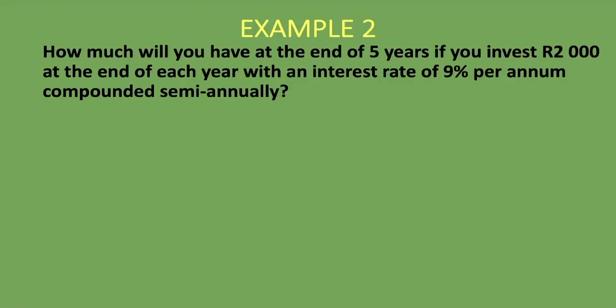Let's get into the second example. How much will you have at the end of five years if you invest R2,000 at the end of each year with an interest rate of 9% per annum compounded semi-annually? The payment occurs once per year — annually — but the interest rate is compounded semi-annually, meaning twice per year. They do not coincide, so we need to convert the interest rate to match the payment period — we need the effective annual interest rate.